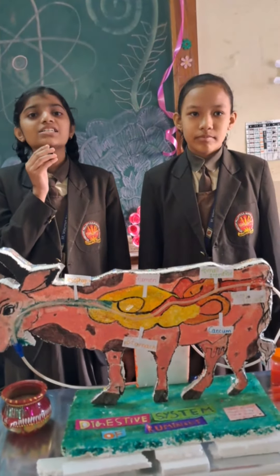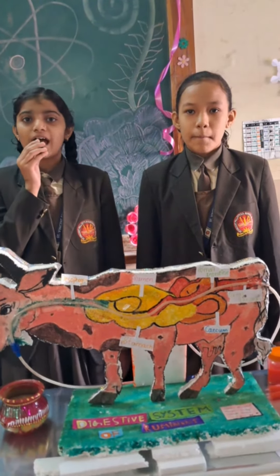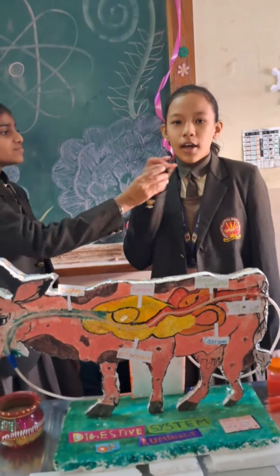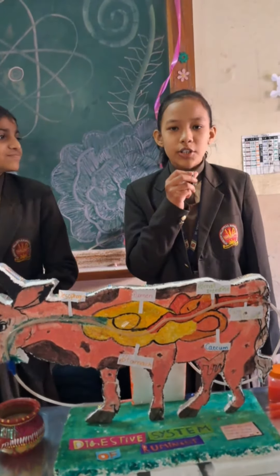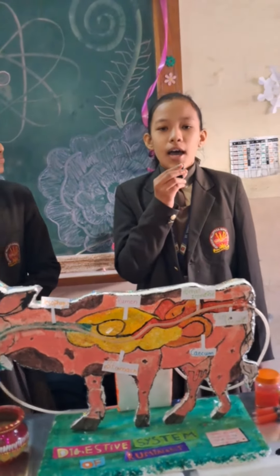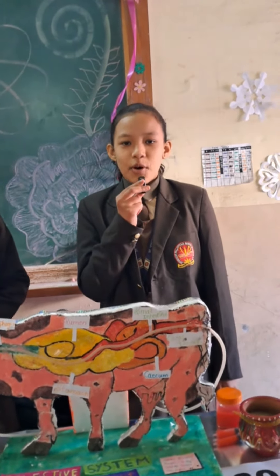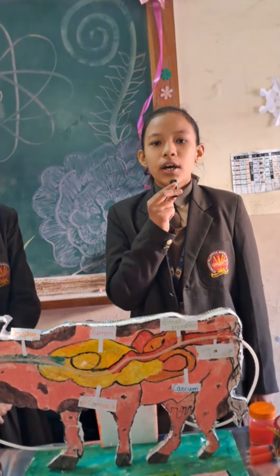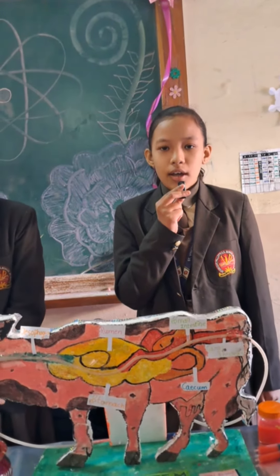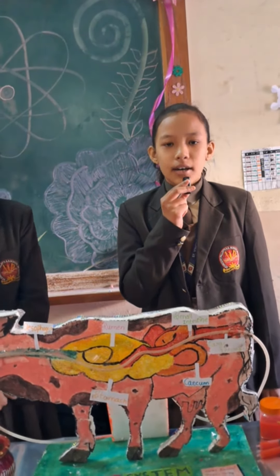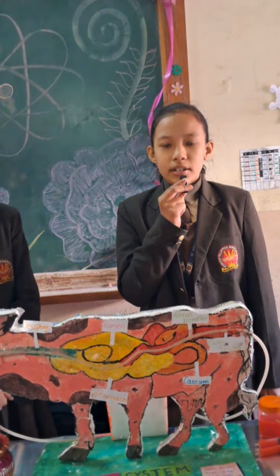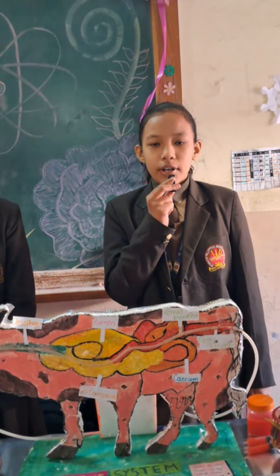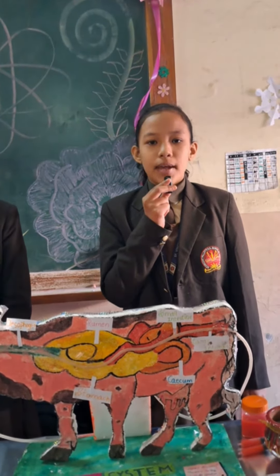Now Prakriti will explain about the large intestine and small intestine. The large intestine includes the colon, rectum, and anus. The small intestine consists of the duodenum, jejunum, and ileum. Thank you.